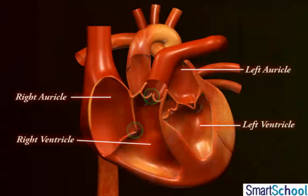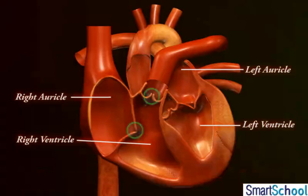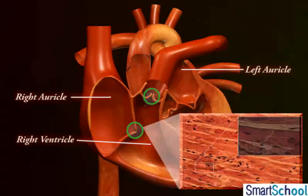There are two valves between the right auricle and the right ventricle. These valves provide one-way passage for the unidirectional flow of blood from auricle to the ventricle. The valves of the heart are composed of special muscles called the cardiac muscle fibers.